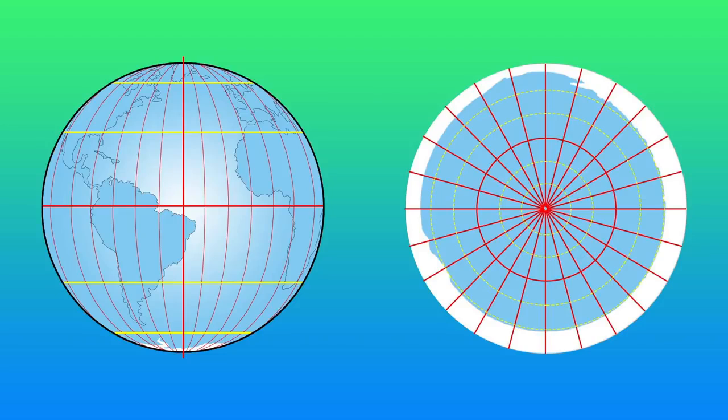There are two more lines, about 23 and a half degrees on each side of the Equator. They are colloquially called the Tropic of Cancer to the North and the Tropic of Capricorn to the South.